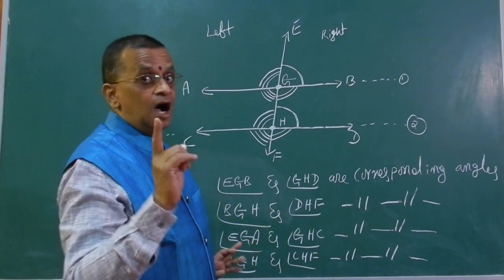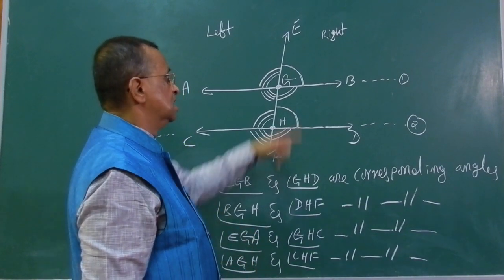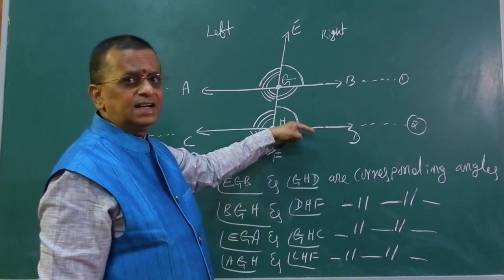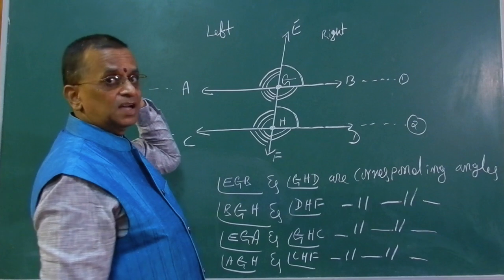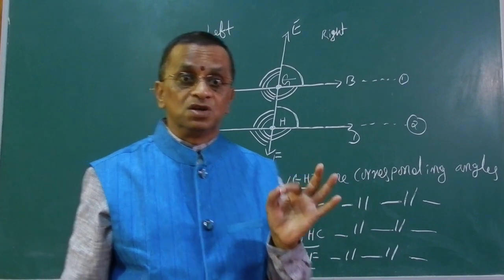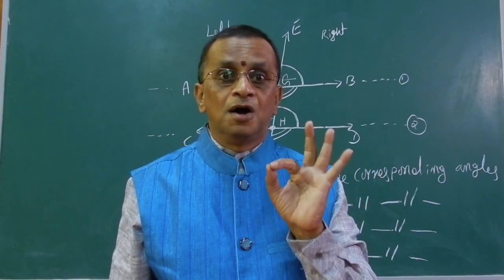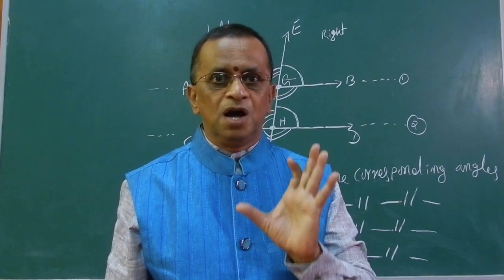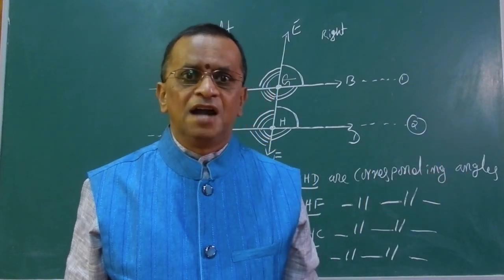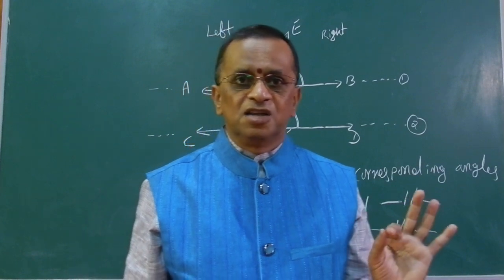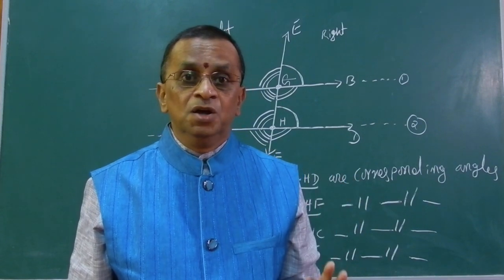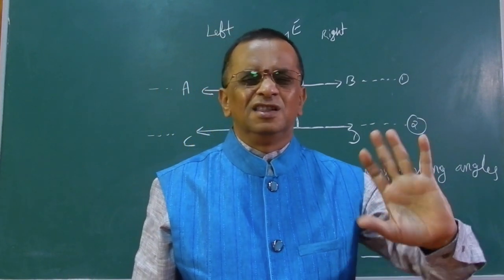So first you must learn how to identify corresponding angles: above first line and above second line, below first line and below second line, on both the right side and left side, we get corresponding angles. Dear students, you must remember these corresponding angles are always equal — it is the postulate of geometry. That is, if a transversal line cuts two parallel lines, then corresponding angles are equal. Using this postulate, we will prove the next theorems in the next video.